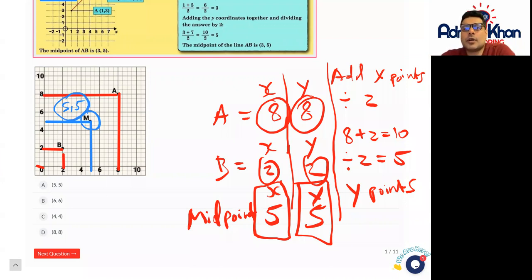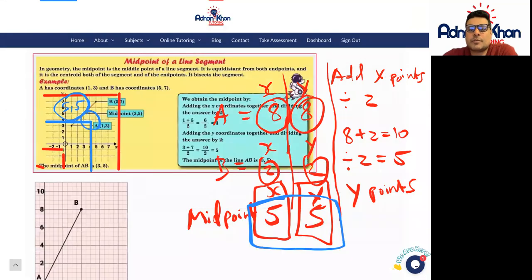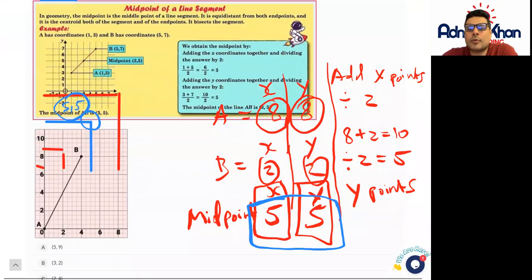You get the two points, work out the x-axis for A and B, add them up, divide by 2. Work out the y-axis, add them up, divide by 2, and that's how you get the midpoints. These are our midpoints here: (5, 5). In this case, we know that our answer is A, which is (5, 5). Just be careful with the rest of the questions.